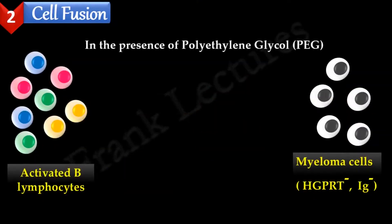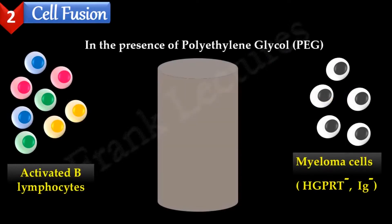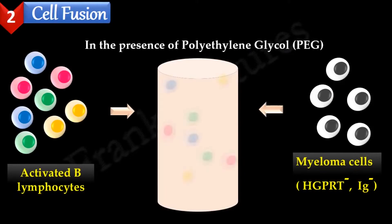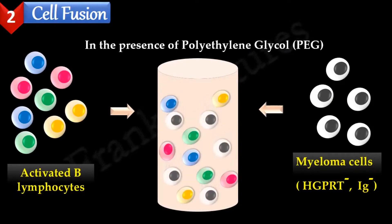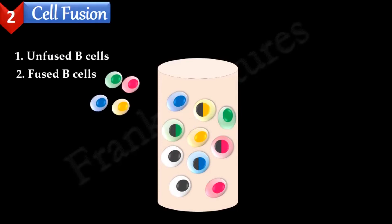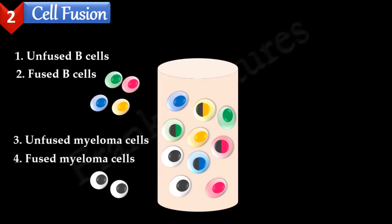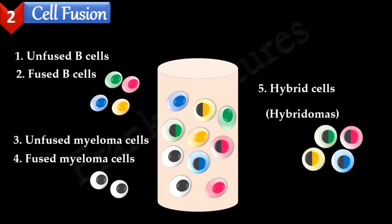The second step is cell fusion. The lymphocytes are mixed with HGPRT-defective myeloma cells. These HGPRT-defective cells cannot synthesize nucleotides as they lack the gene for the enzyme hypoxanthine-guanine phosphoribosyltransferase. Cell fusion is facilitated by a chemical fusogen called polyethylene glycol. The products will be five types of cells: unfused B cells, fused B cells, unfused myeloma cells, fused myeloma cells, and hybridoma cells formed by the fusion of activated B cells and myeloma cells.